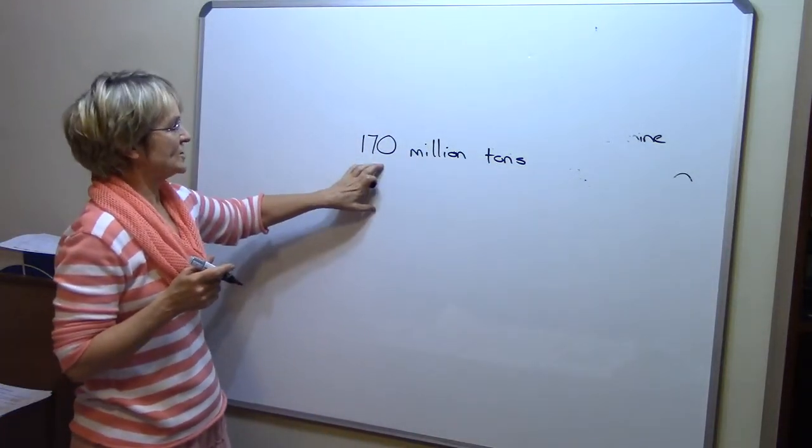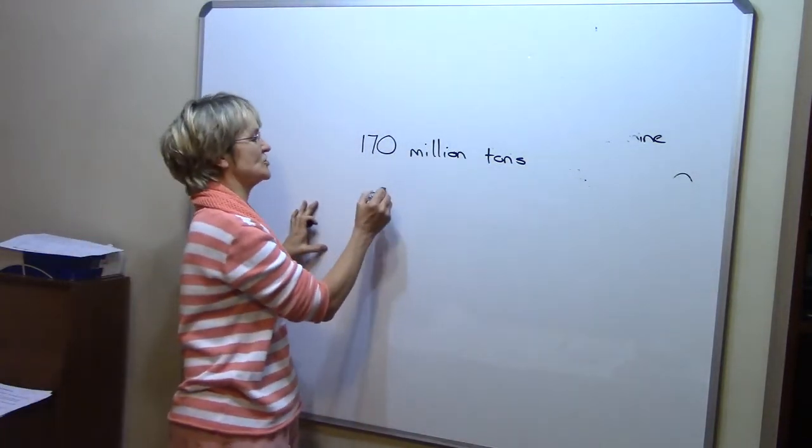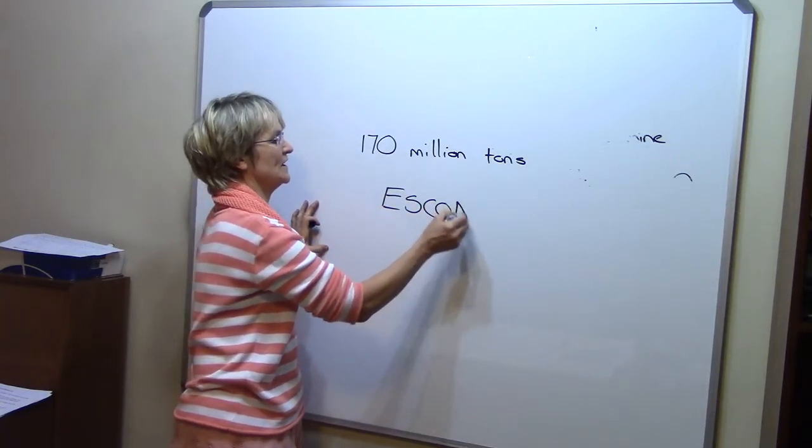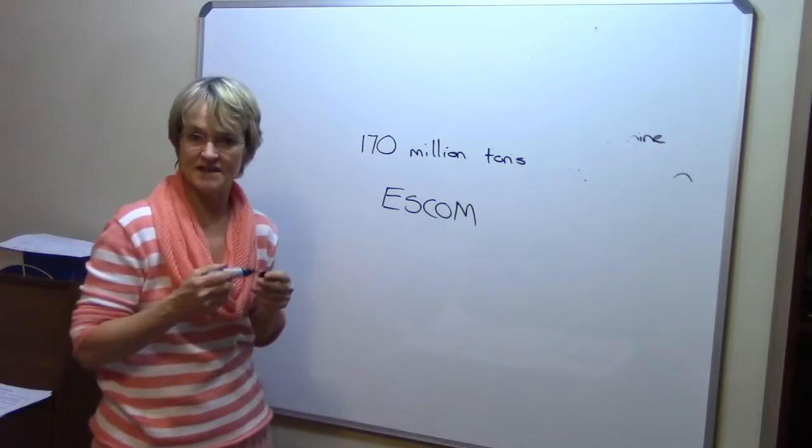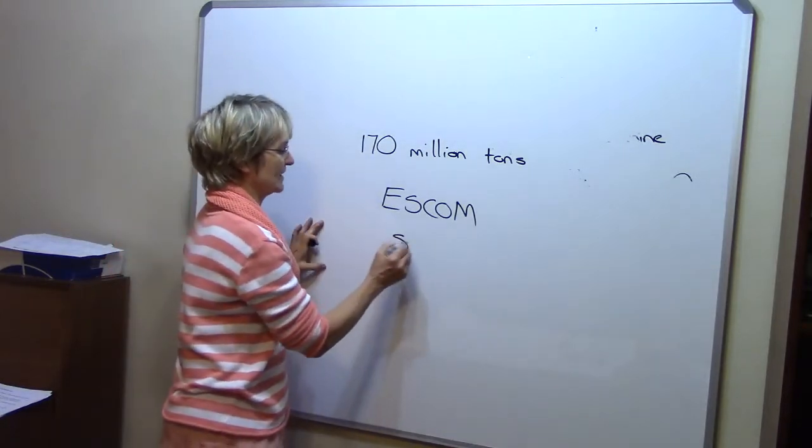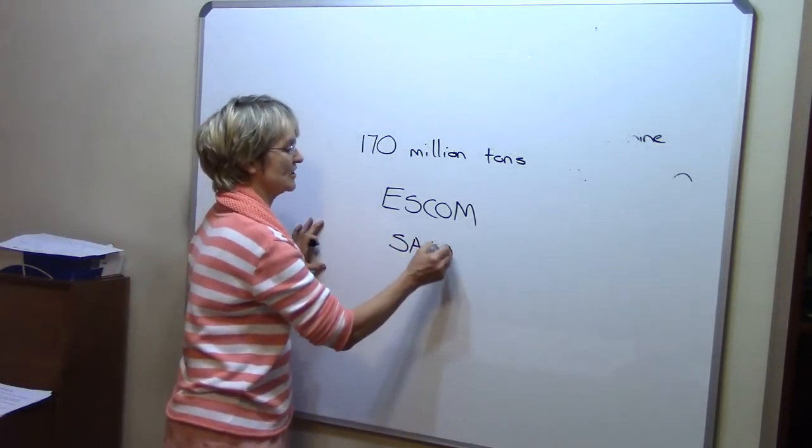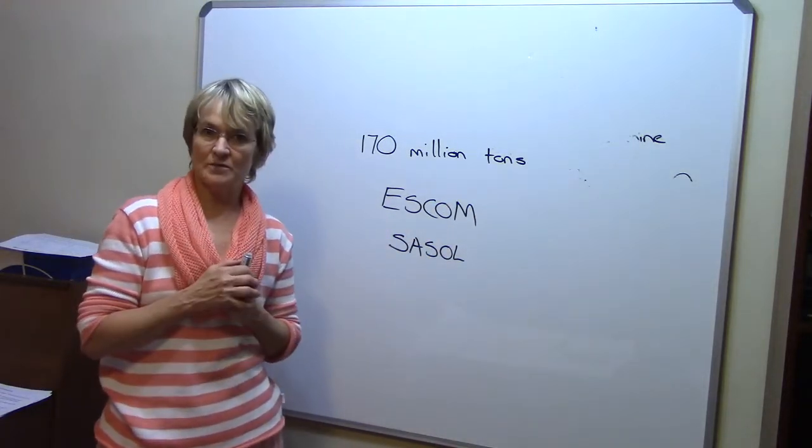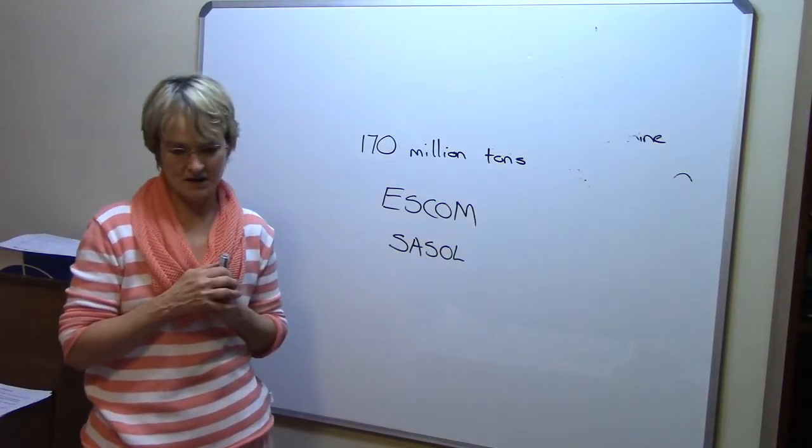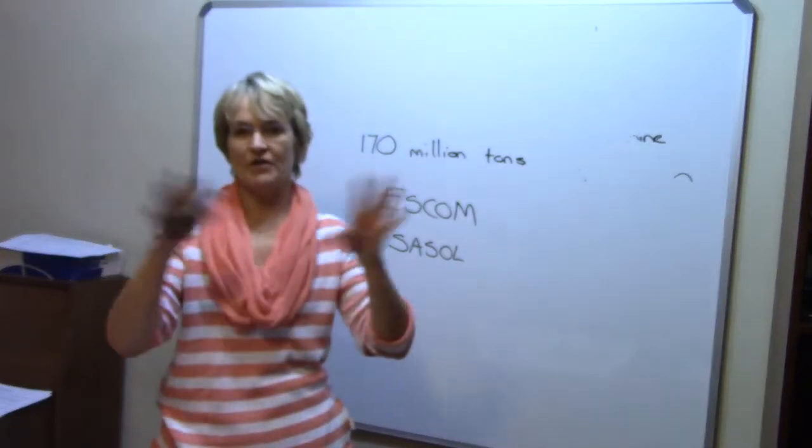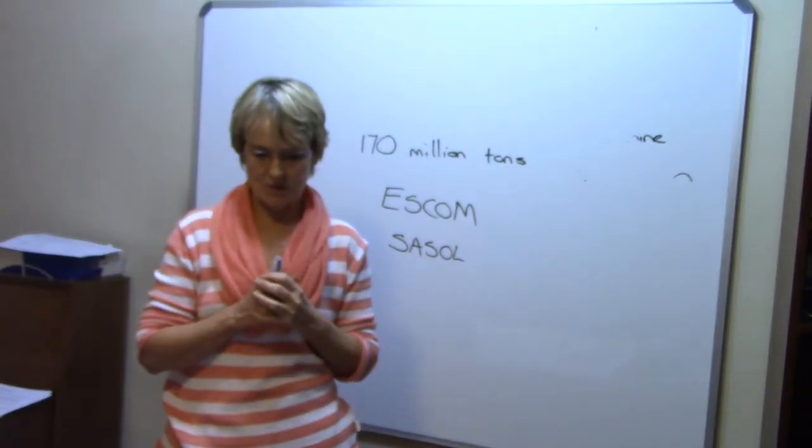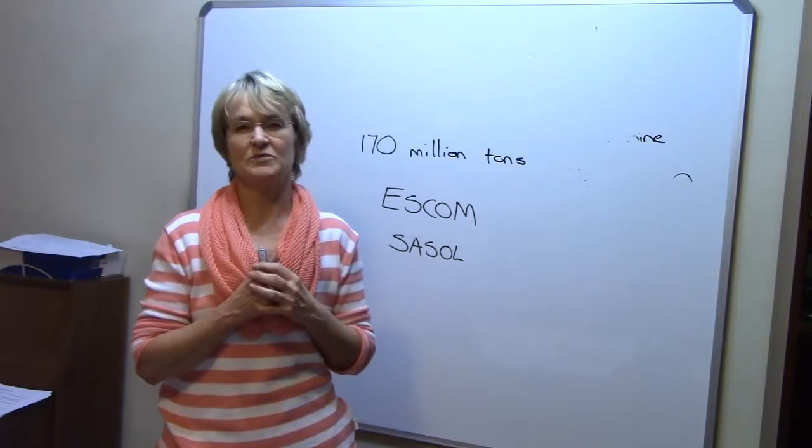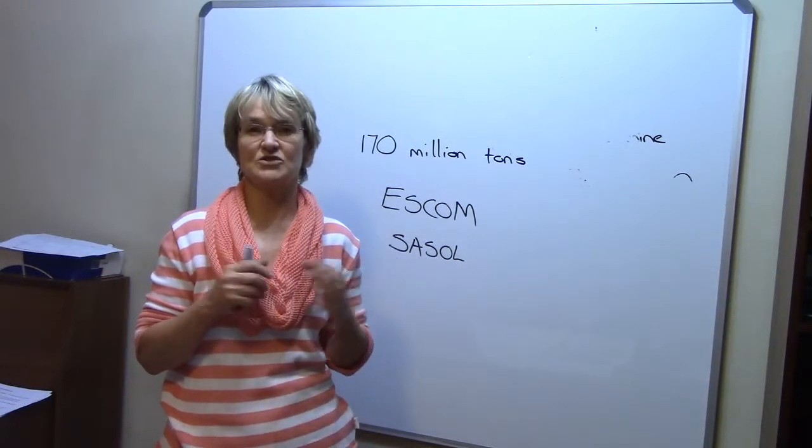Most of the coal is used by Eskom to produce electricity. Sasol and other chemical industries also use significant amounts. Certain metallurgical processes make use of coal. There's a wide variety of uses, and according to geologists we have enough coal for the next 200 years.